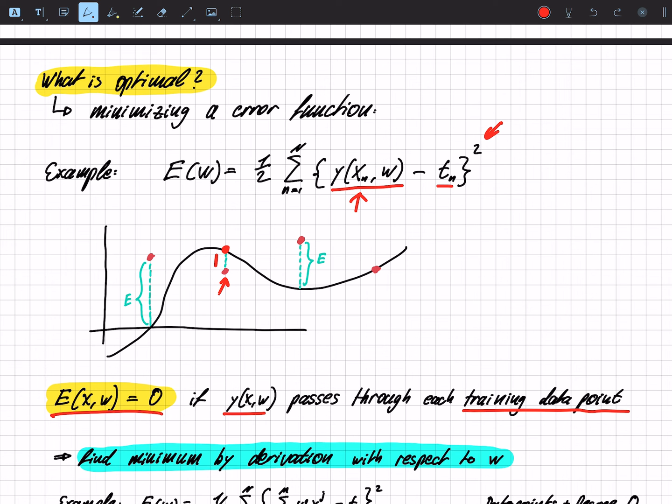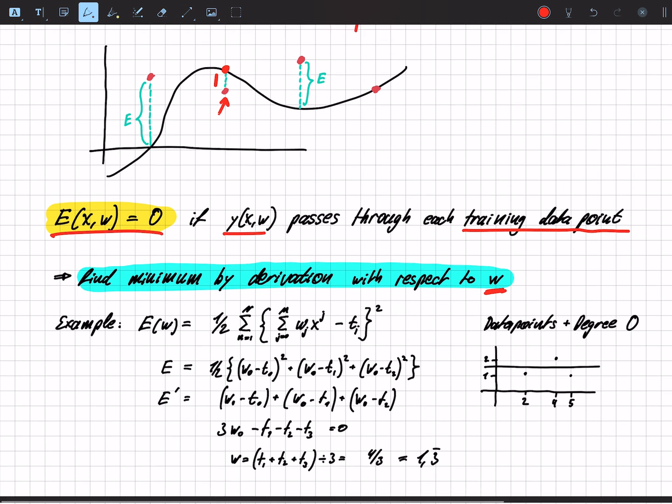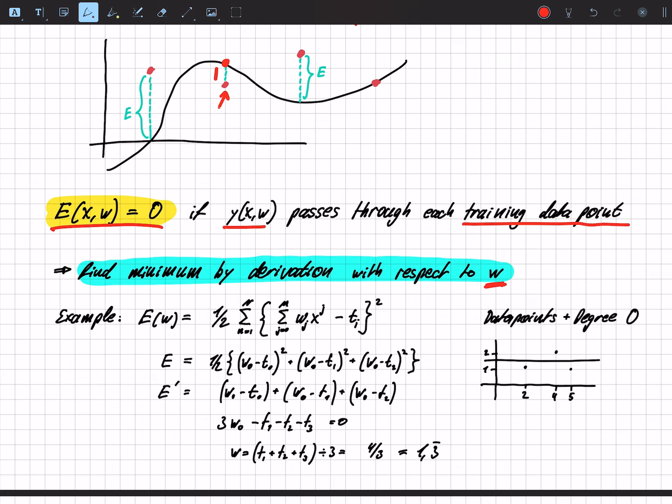But how do we find a minimum of this function? Because we want to minimize the error to get as close as possible to the right prediction. And we do this by derivation with respect to w. This is very important. Because normally we derive with respect to x, but in this case we're changing the parameters w, and this is why we have to derive by w.